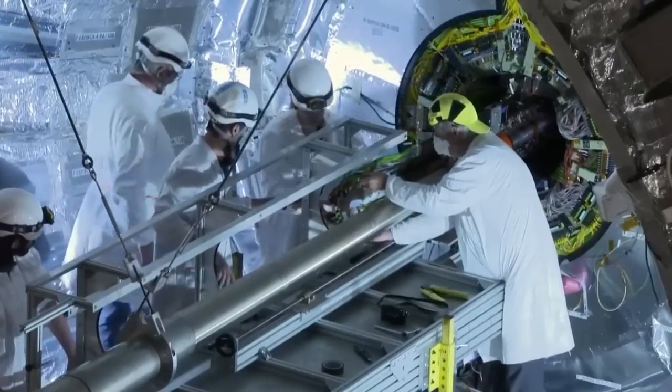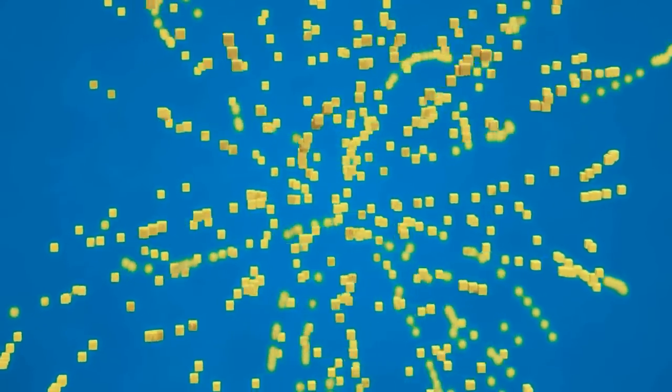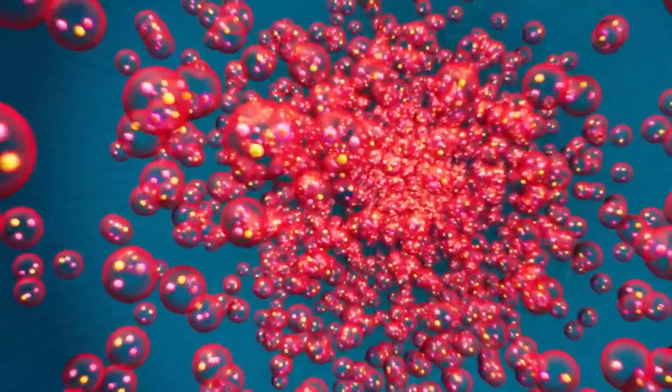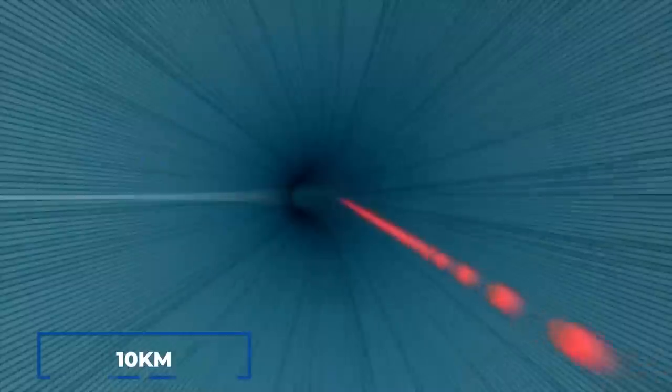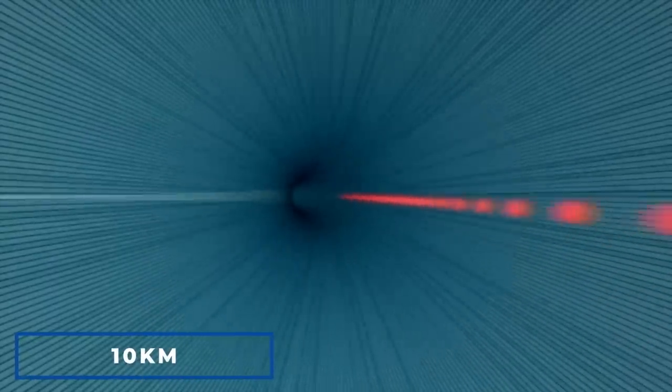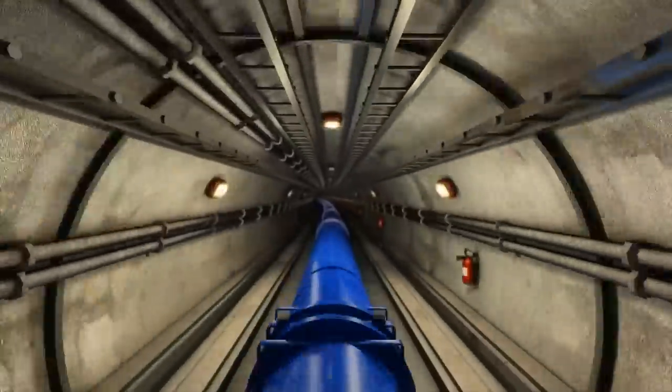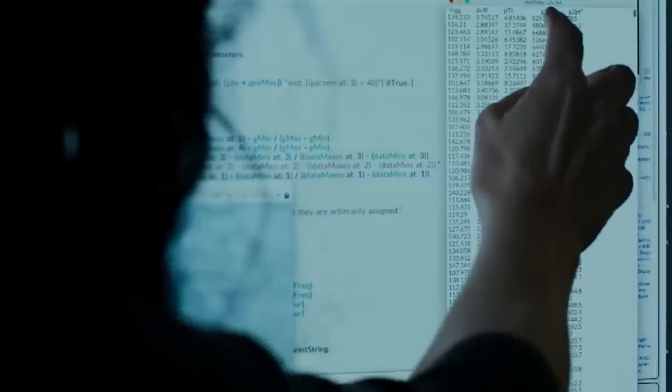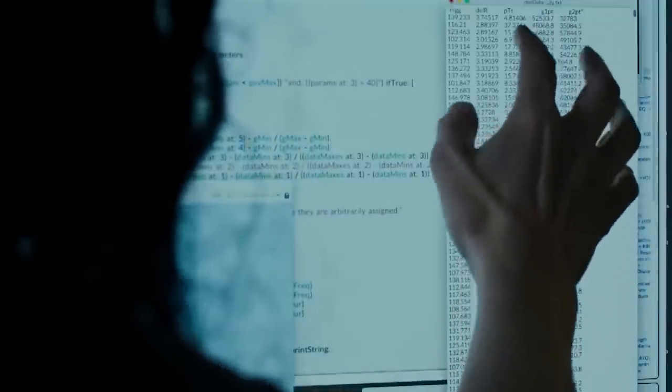Another sort of magnet is used just before the collision to squeeze the particles close enough together, increasing the likelihood of collisions. Because the particles are so small, causing them to collide is similar to firing two needles 10 kilometers apart with such precision that they meet halfway. The CERN control center houses all of the accelerator's controls, services, and technical equipment under one roof.